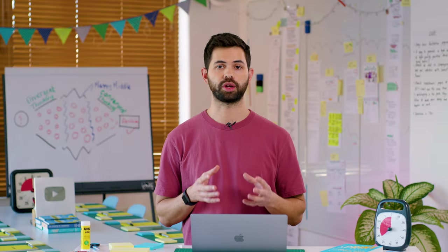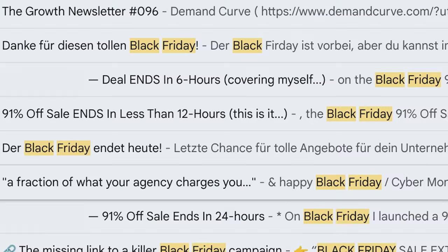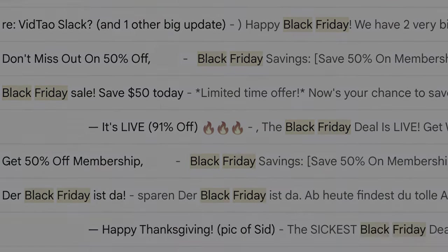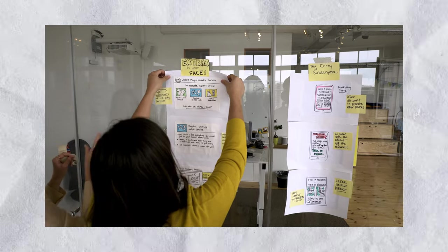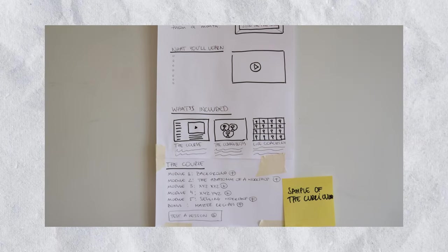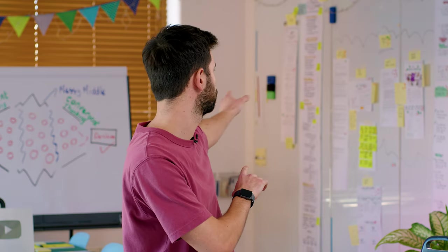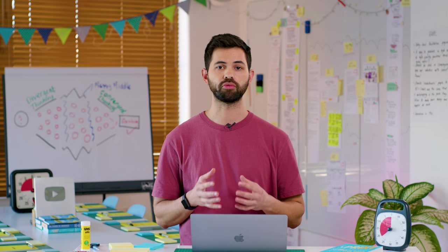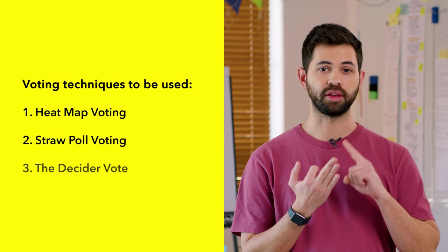Imagine that we're running a marketing strategy workshop to create a landing page for our Black Friday campaign. Our main challenge is we want to stand out from all the Black Friday noise out there from other companies' ads and products. At this stage of the workshop, each participant should have created a concept mimicking the landing page and put them on the wall. To decide which concept we'll use, we will use three simple voting techniques: heatmap voting, straw poll voting, and the decider vote.